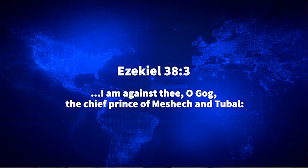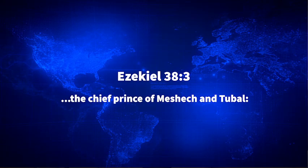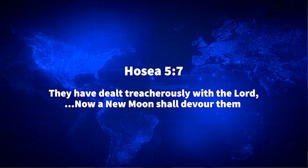Ezekiel 38 verse 3 says: 'I am against you, Gog, chief prince of Meshach and Tubal.' That is why many theologians believe that Gog is the beast — this eighth and final beast — because he is the chief prince of Meshach and Tubal, two cities located in Asia Minor, modern-day Turkey. Hosea chapter 5 verse 7 says: 'They, Israel, have dealt treacherously with the Lord, so now a new moon shall devour them.' That new moon is symbolic of Islam coming against Israel — the king of the north coming against Israel.